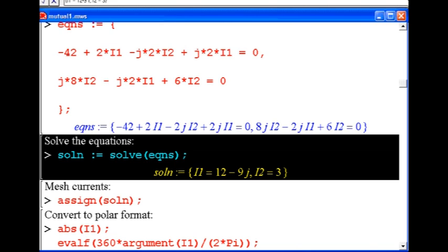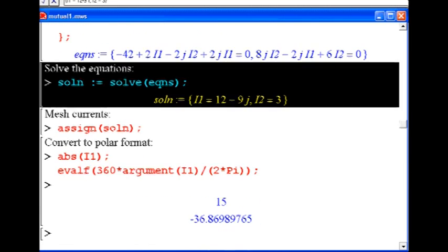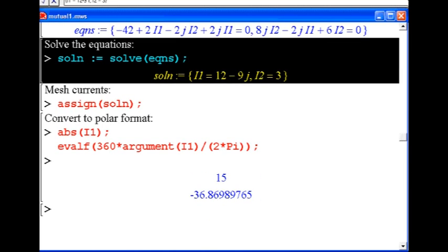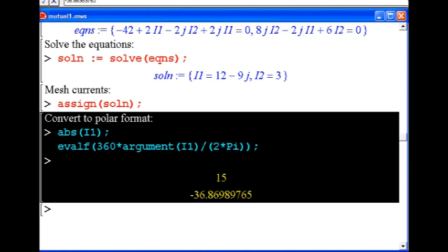And that yields 12 plus j9 for current I1 and then current I2 is just 3 so there's no phase there. I'll go ahead and assign that solution so I can work with them individually. And our current I1 has magnitude 15 with phase angle of basically minus 37 degrees.